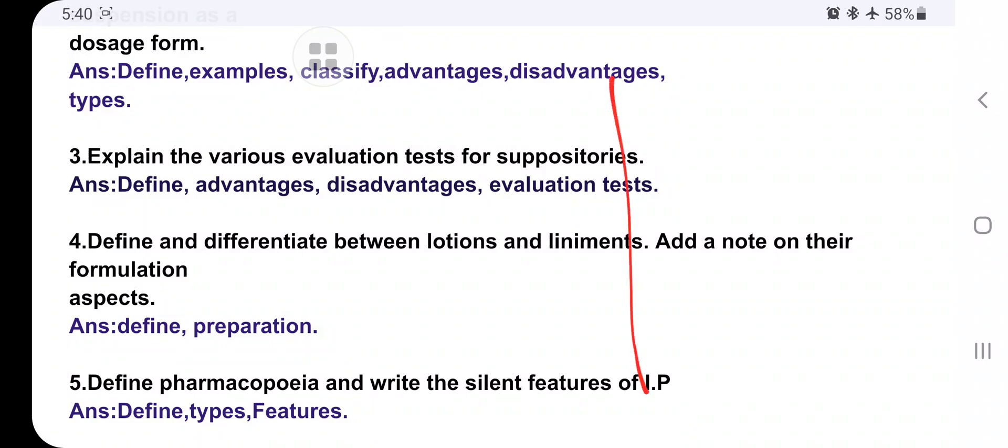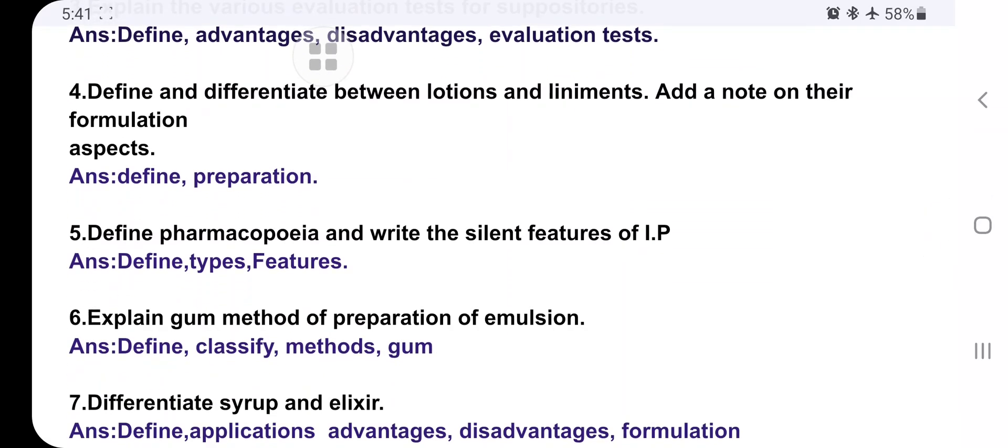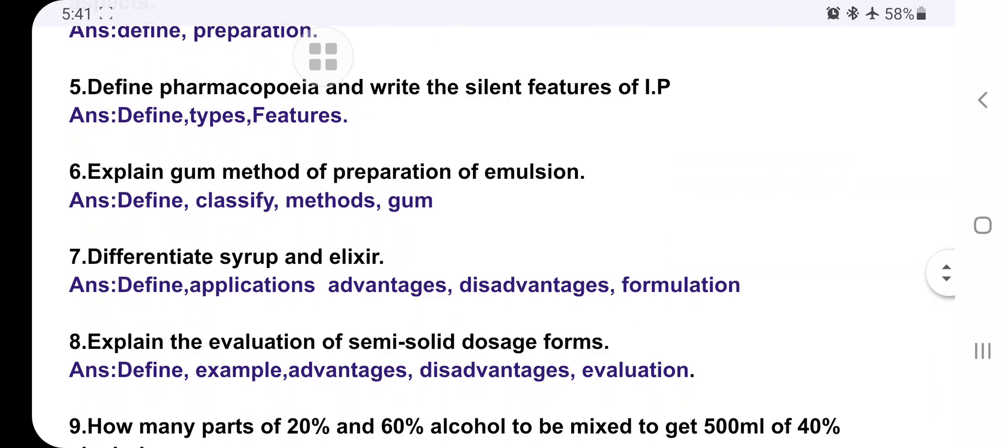Explain the various evaluation tests for suppositories: Define, advantages, disadvantages, and evaluation tests. Then differentiate between lotions and liniments. Don't make columns here. In your mind there is HSC or SSLC where you are making two columns for differences - not here. It's totally different. First write about lotions, advantages, disadvantages, write one formulation, then go for liniment. This pattern you have to follow for differences. Then pharmacopoeia: Remember Indian Pharmacopoeia. If they ask, try to write about Indian Pharmacopoeia - at least you will get two to three marks.